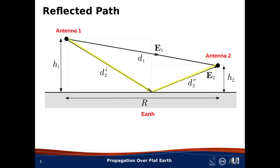The second path is due to reflection from the ground. We invoke results from the theory of oblique incidence from planar boundaries. We can identify a point on the ground for which the incident and reflected rays will satisfy Snell's law — that is, angle of incidence equals angle of reflection. So we define distances d sub 2 super i and d sub 2 super r, and the overall path length along the reflected ray path is d sub 2 super i plus d sub 2 super r.